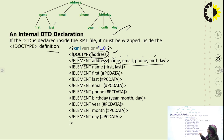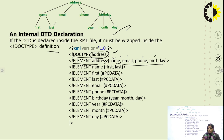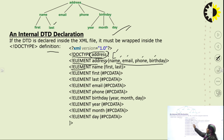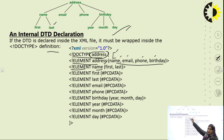Next, take each element and if there will be further division of that element, write the names of those child elements. The first element is name. From the tree structure, name is further divided into two parts: first and last. So we write: ELEMENT name (first, last).